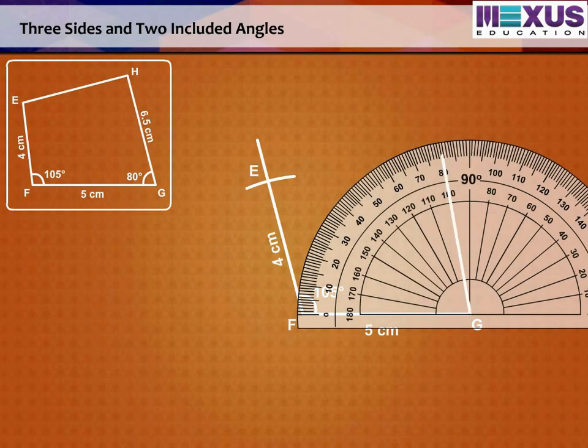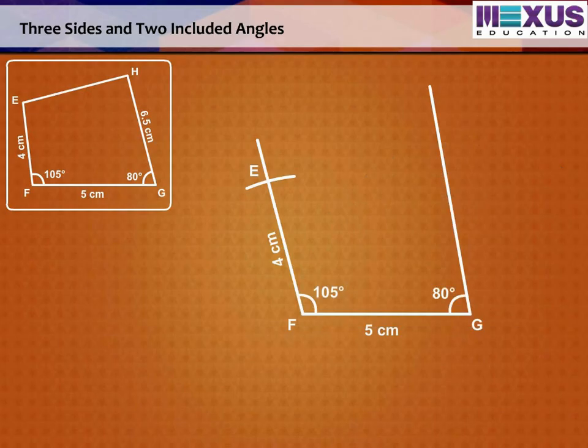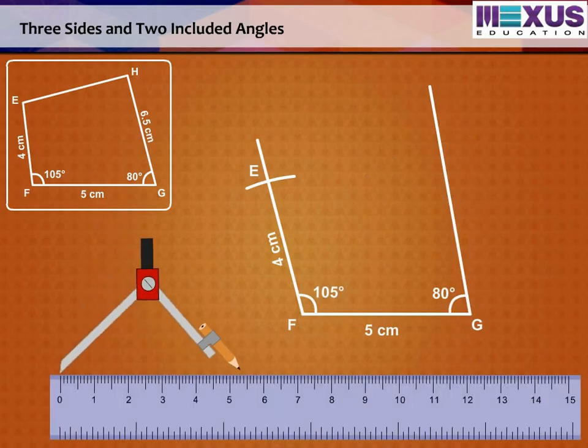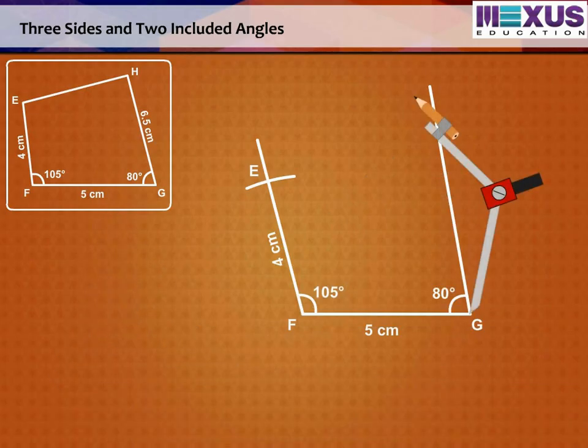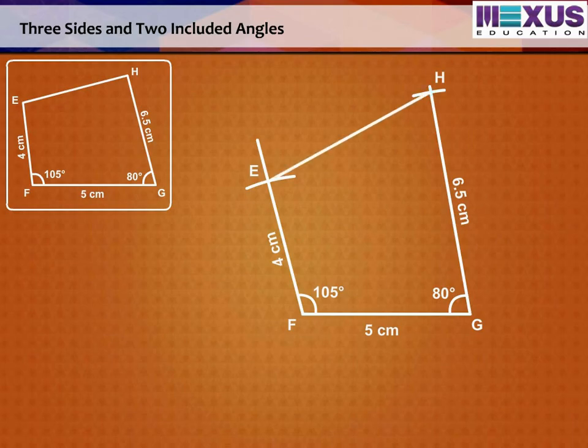Step 3. At G, draw an angle of 80 degrees with the help of the protractor. Now cut an arc on this line with G as center and radius 6.5 cm. Mark the intersecting point as H. Join EH and complete the quadrilateral EFGH.